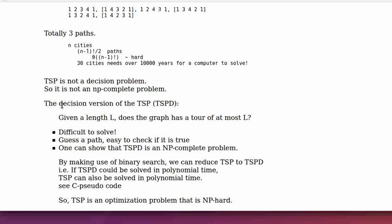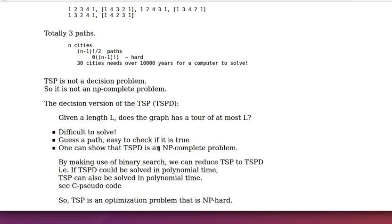However, we can define a decision version of the TSP — call it TSP-D. Given a graph and a length L, TSP-D asks: does the graph have a tour of at most L? This is a decision problem because we can say yes or no. The problem is difficult to solve, but we can guess a path and easily check if it is correct in polynomial time. One can show that TSP-D is indeed an NP-complete problem.